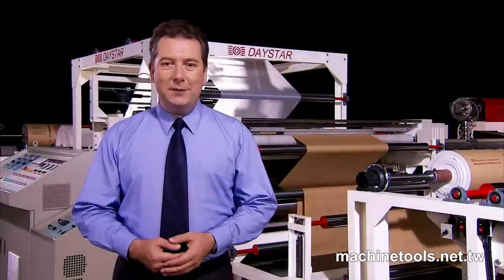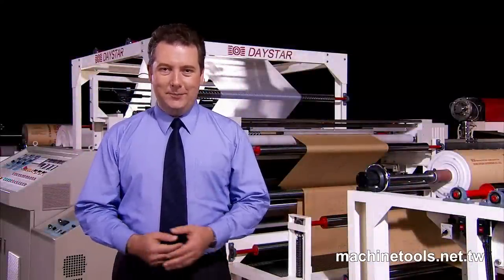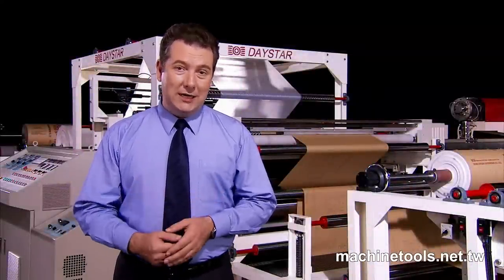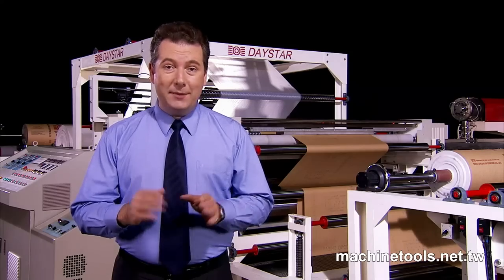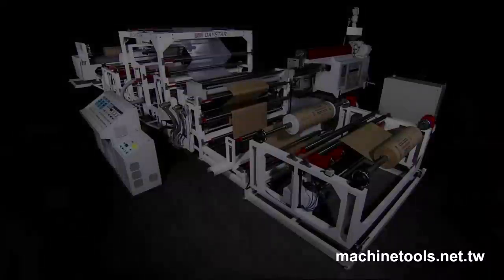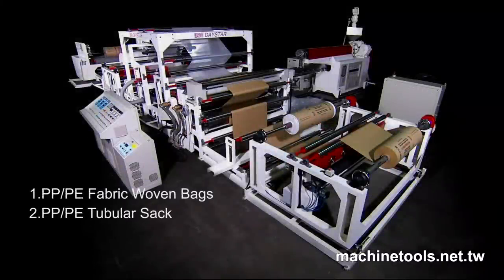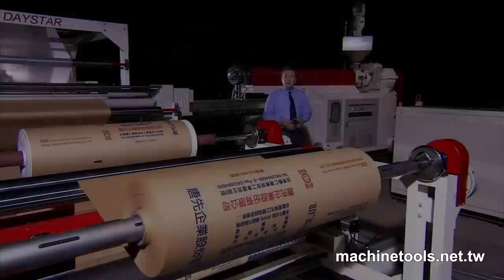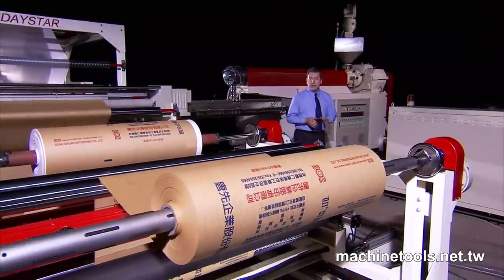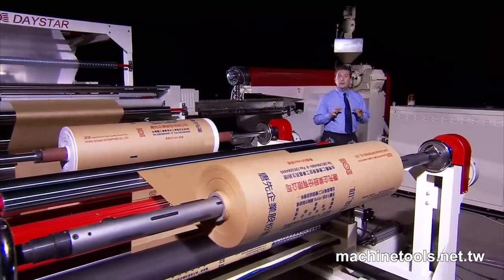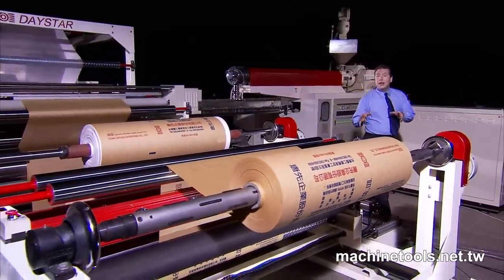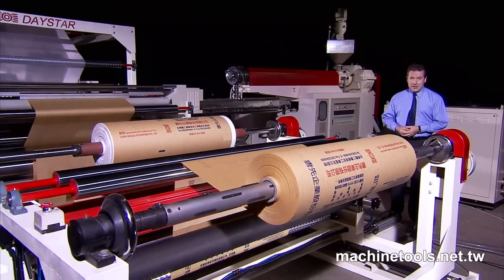First we will look at the PPPE lamination line. The laminator on this machine is designed to provide four lamination products. The laminating material is sandwiched between the two substrate layers to create a double-sided laminating material.